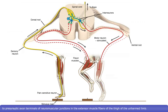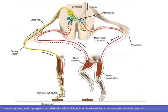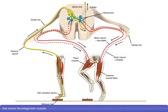The action potentials reach neuromuscular junctions in the extensor muscle fibers of the thigh of the unharmed limb, leading to muscular contraction and causing the limb to stabilize the body during the withdrawal action. The sensory neuron also synapses contralaterally with inhibitory interneurons, which in turn synapse with motor neurons that control the antagonistic muscles.